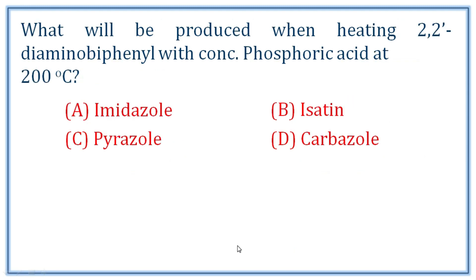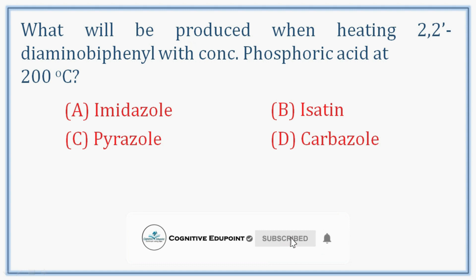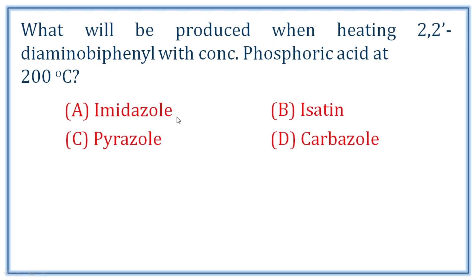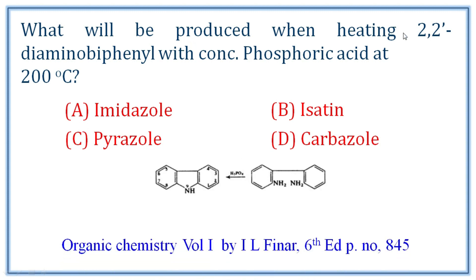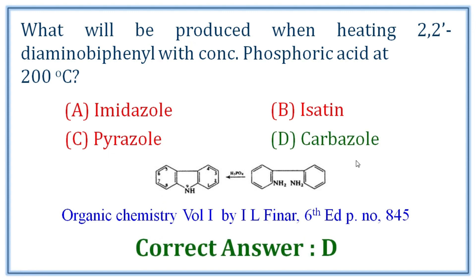Next question: what will be produced when heating 2,2'-diaminobiphenyl with concentrated phosphoric acid at 200 degrees Celsius? The options include imidazole, pyrazole, and carbazole. When you heat 2,2'-diaminobiphenyl with phosphoric acid at 200 degrees Celsius, we will get carbazole as the product. Correct answer: D.